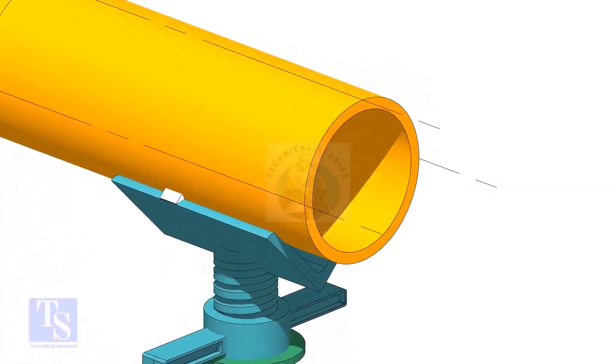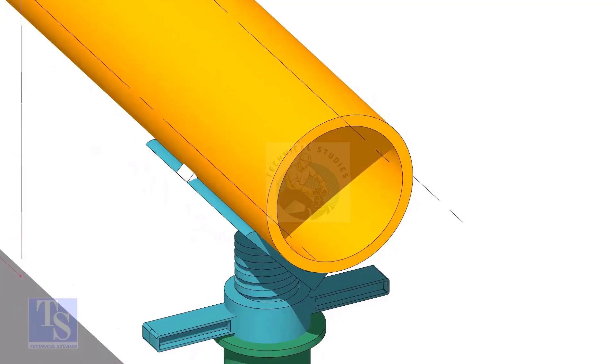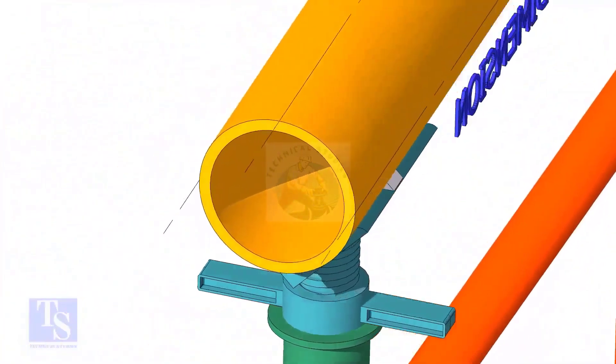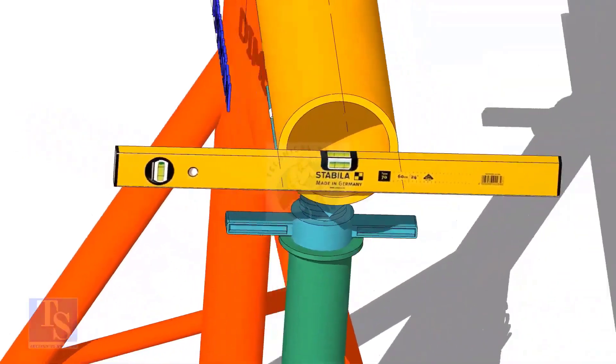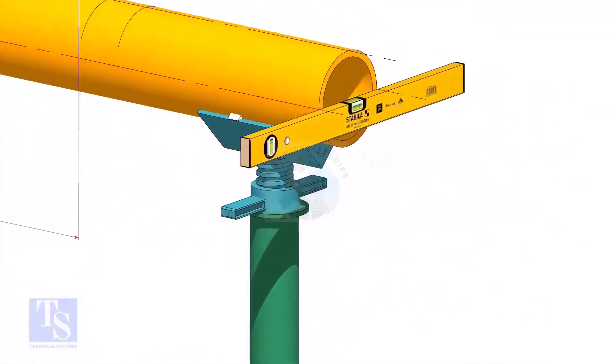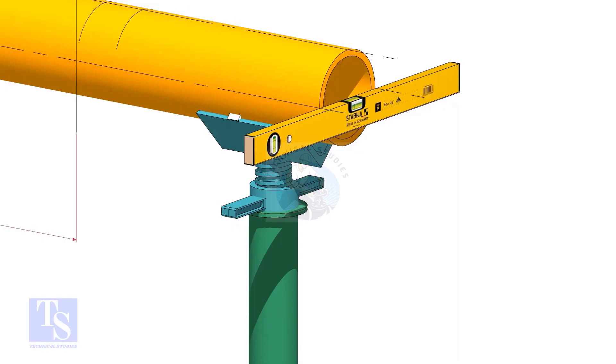After leveling the pipe, mark the center line and two quarter lines. Arrest the pipe, if required, make small tack welds.